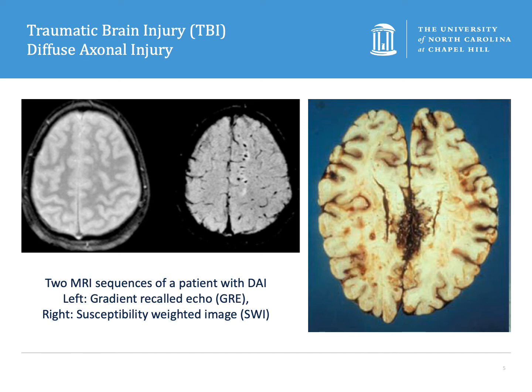Gross pathologic findings are going to include deep contusions, multiple petechial hemorrhages particularly involving the cerebral white matter, basal ganglia, and upper brain stem as well.